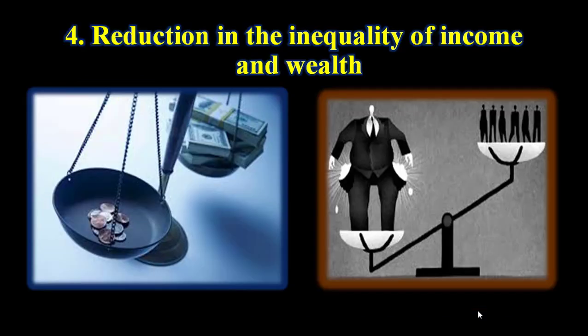The fourth objective is the reduction in the inequality of income and wealth. The planners gave importance to redistribution of wealth so that it would not concentrate in the hands of a few. The focus was on ensuring that the benefits of economic growth reach the poorer sections and that every Indian is able to meet basic needs such as food, decent housing, education, and healthcare.